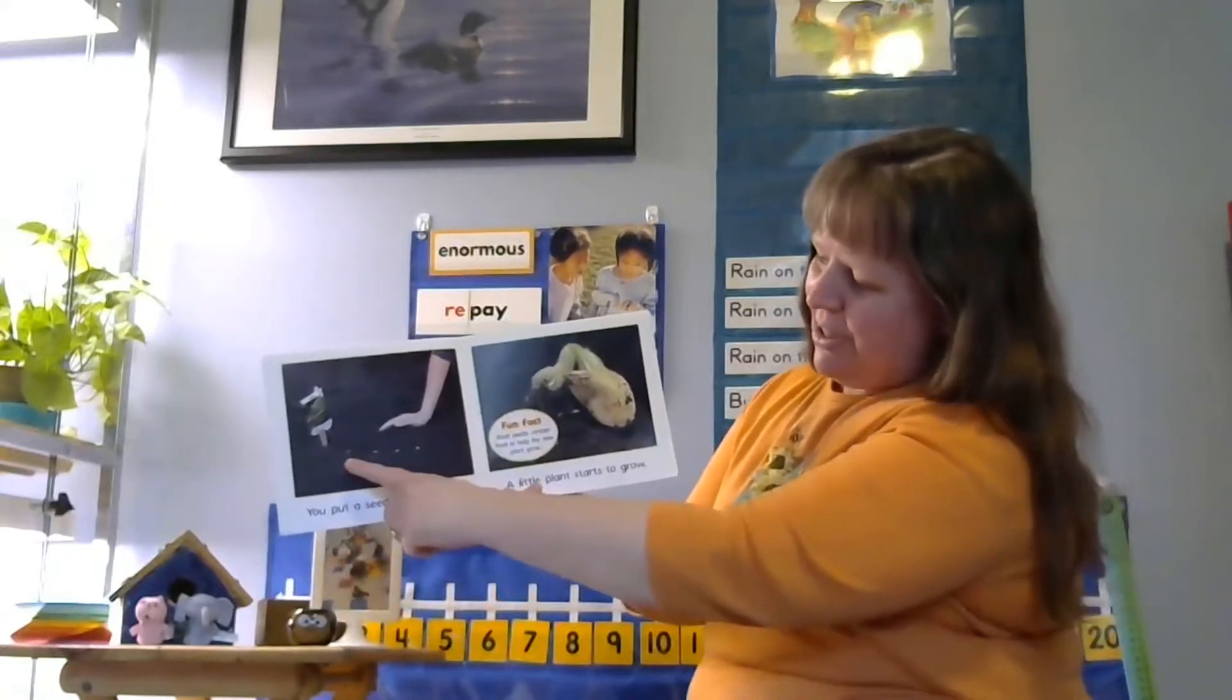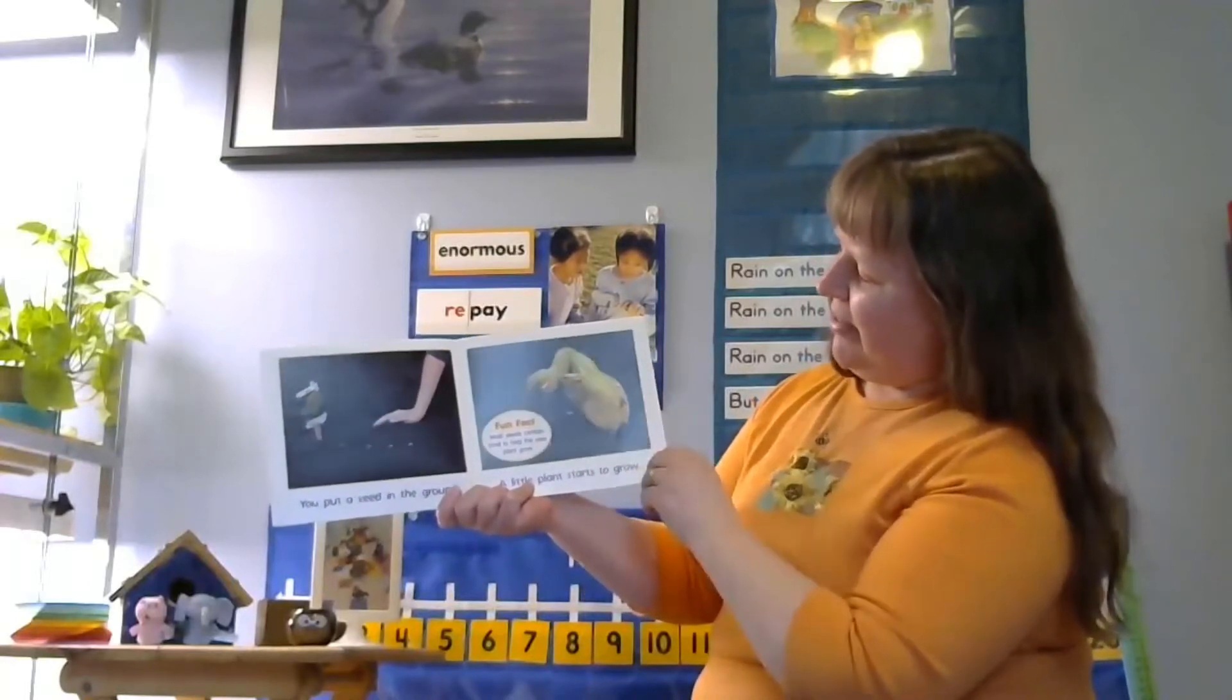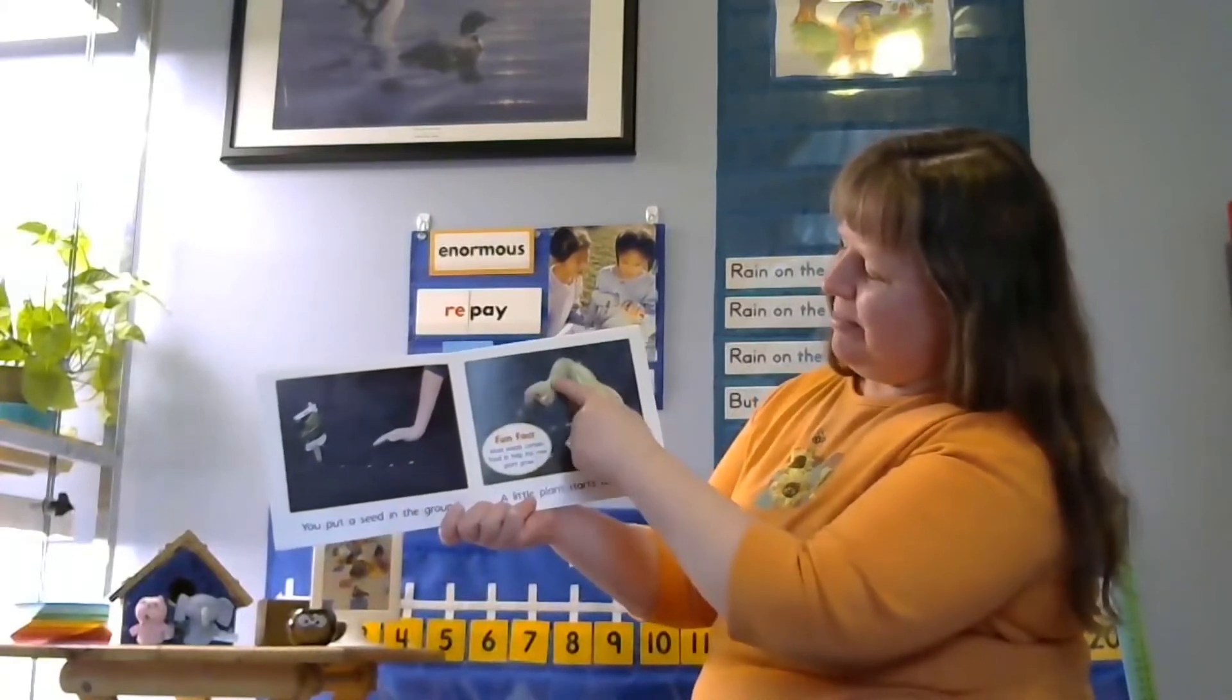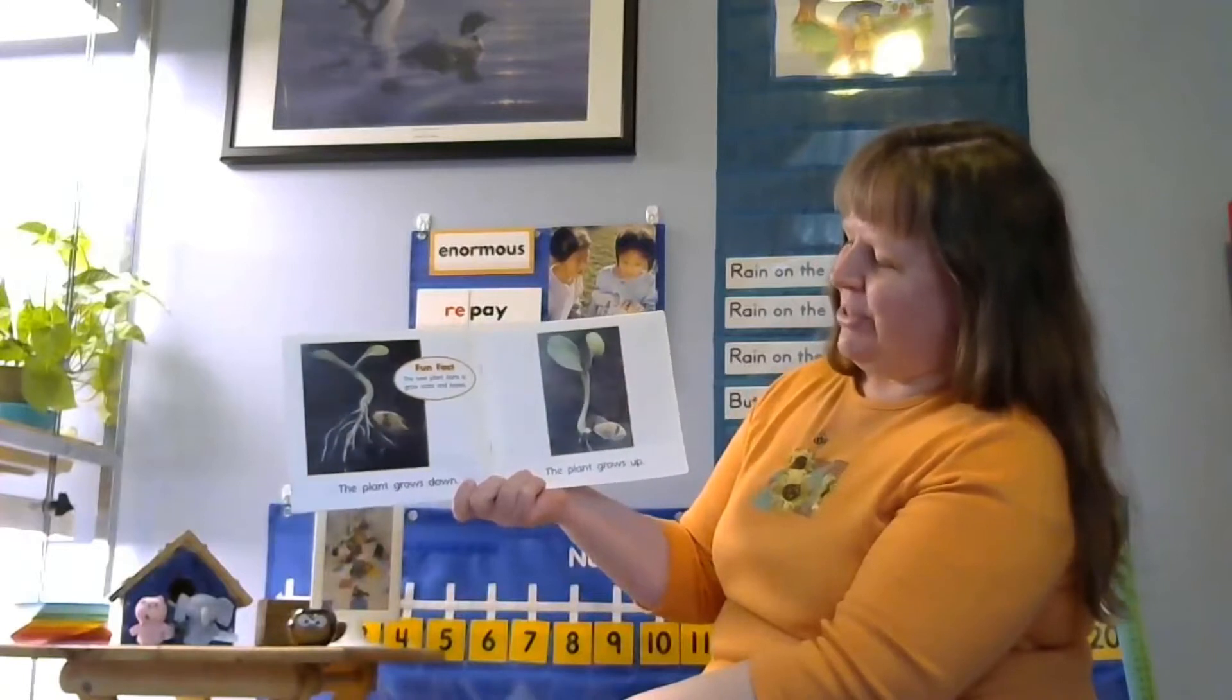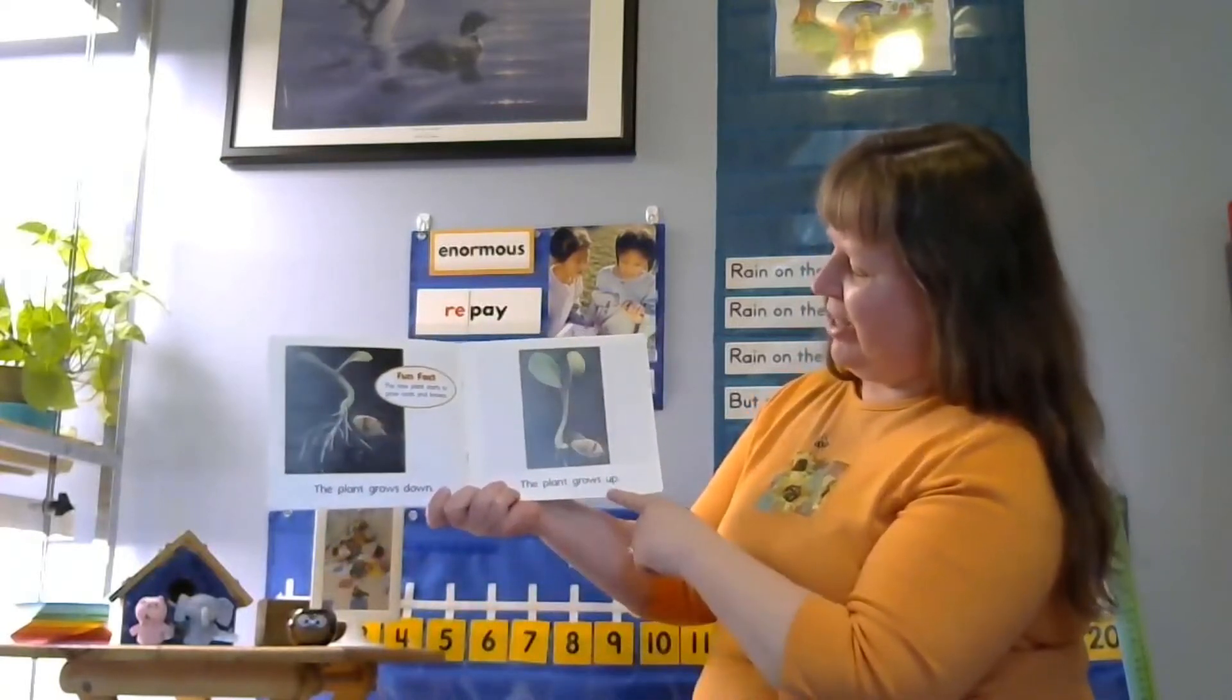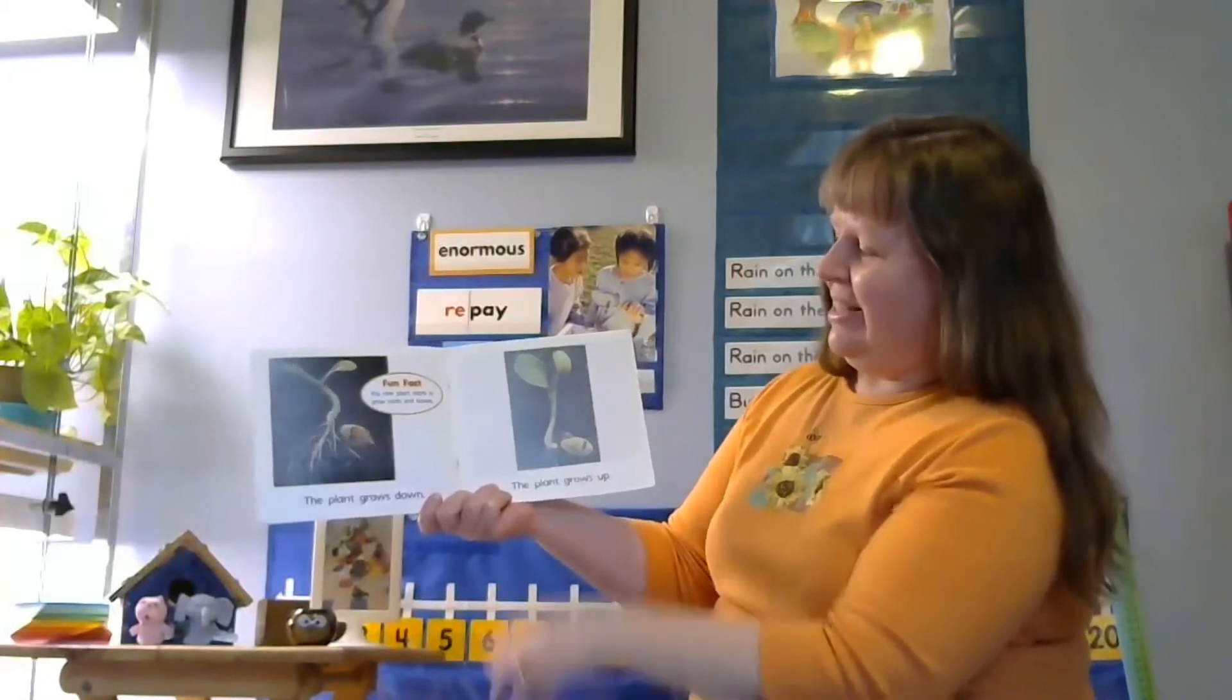So this person has put some seeds down in the dirt, covered them up with dirt. And then here comes this little sprout out of the ground. Now this is a pumpkin seed. So it's growing a little pumpkin plant and we can see the stem starting to come up. The plant grows down and you can see the roots are growing down into the dirt. The plant grows up. So you've got the stem going up and the leaves going up while the roots go down into the ground into the dirt. It says the new plant starts to grow roots and leaves.